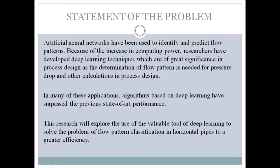Statement of the problem: artificial neural networks have been used to identify and predict flow patterns. Because of the increase in computing power, researchers have developed deep learning techniques which are of great significance in process design, as the determination of flow pattern is needed for pressure drop and other calculations. Algorithms based on deep learning have surpassed previous state-of-the-art performance. This research will explore the use of deep learning to solve the problem of flow pattern classification in horizontal pipes to greater efficiency.